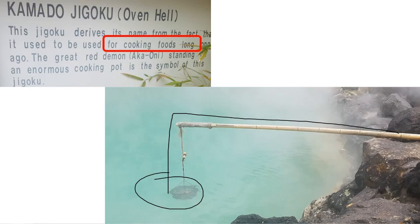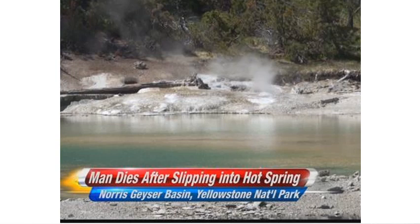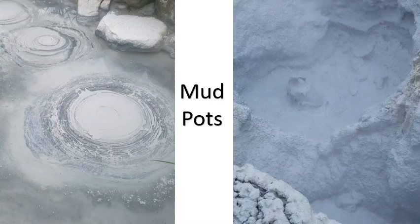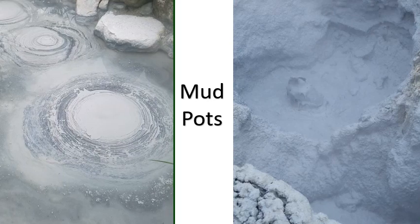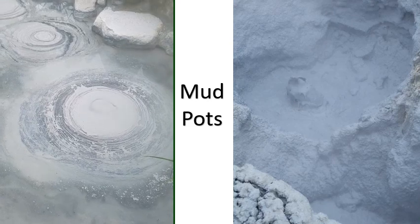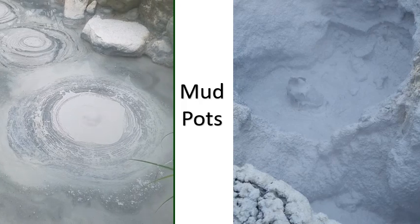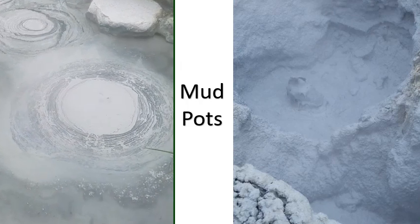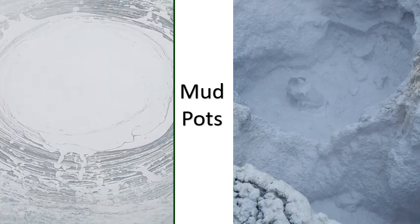Hot springs can be so dangerous they've killed people. At Yellowstone National Park there are many boiling hot springs, and every now and again somebody gets too close and falls in — a guy slipped in just a few years ago and was killed. So to answer how hot hot springs are: they can range from just warm all the way up to boiling. There's also another type called mud pots — hot water comes to the surface and bubbles up, but so much water evaporates that it makes mud instead of a puddle.